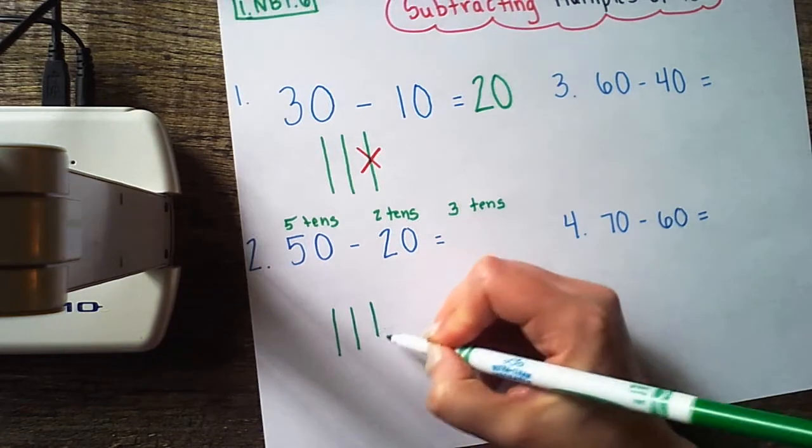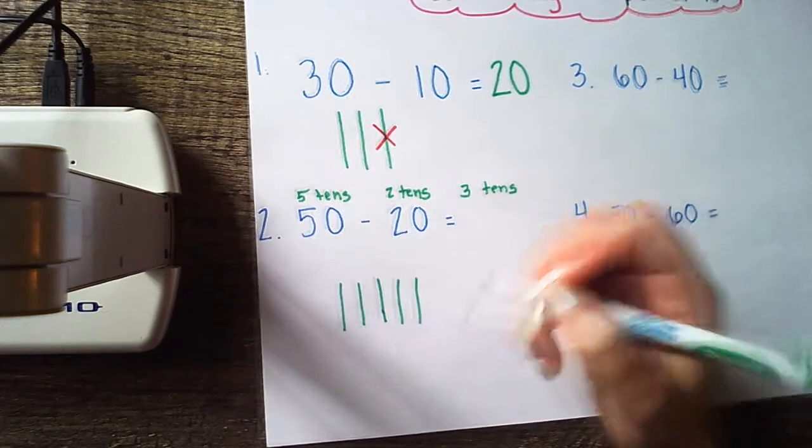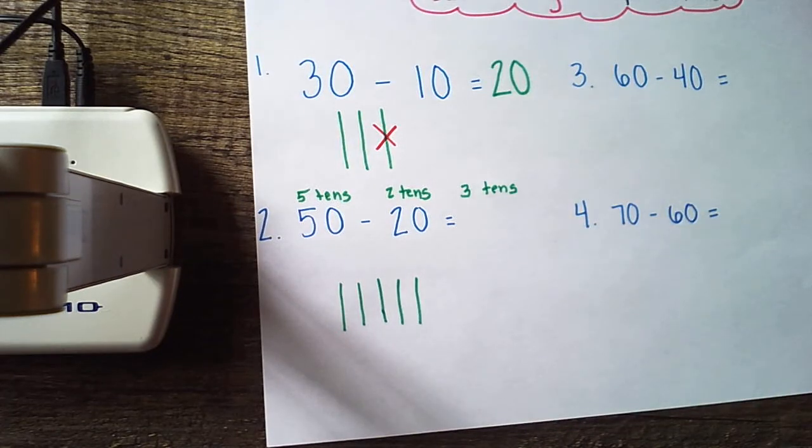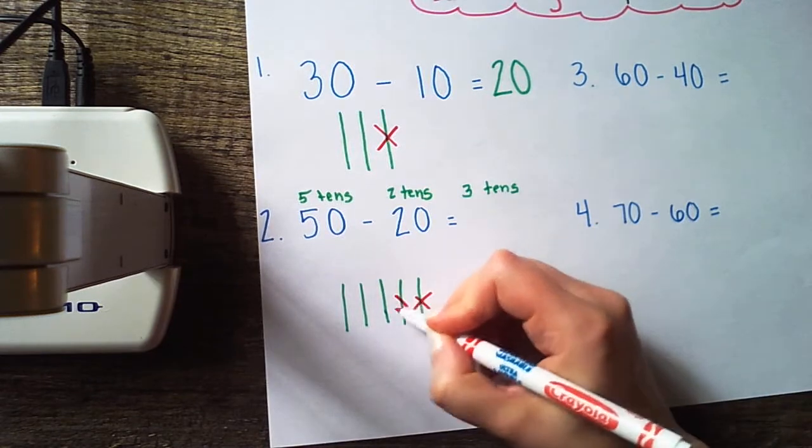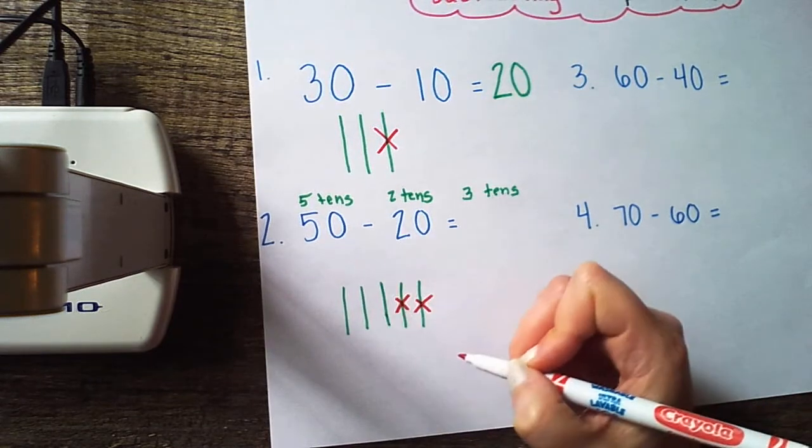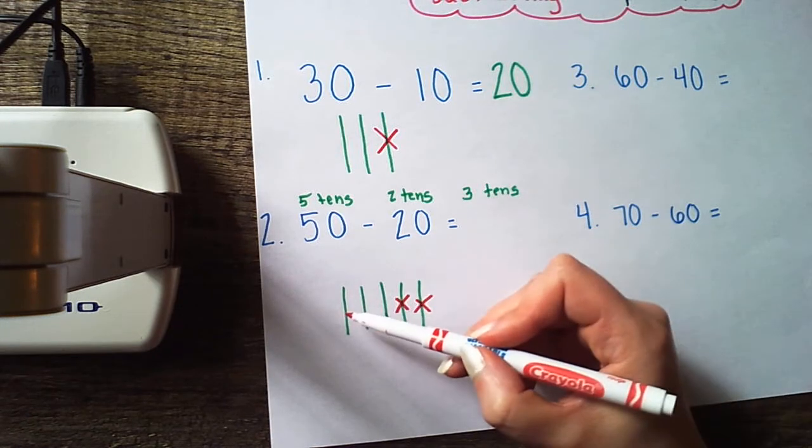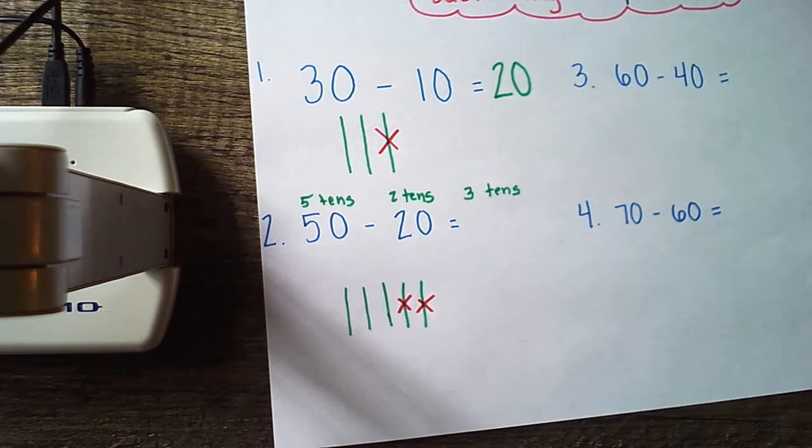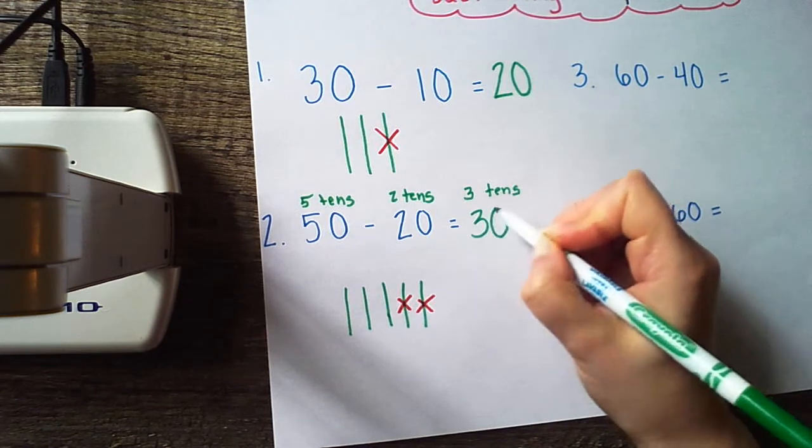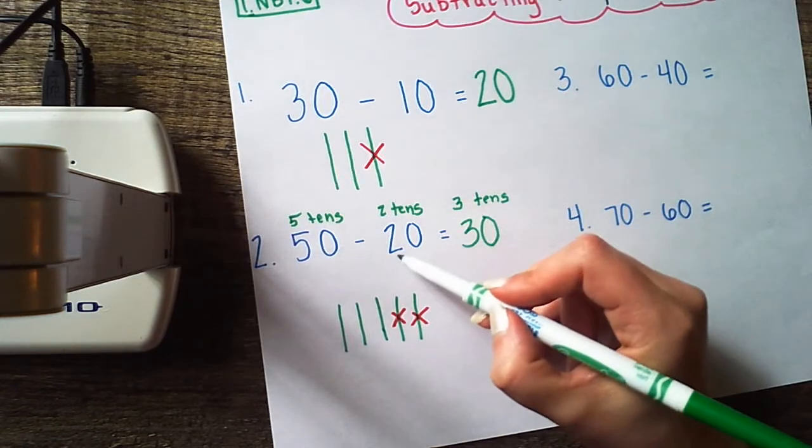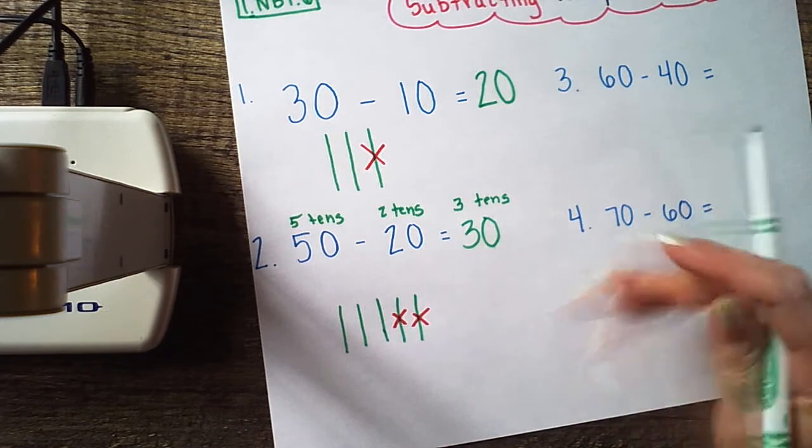I'm going to draw 50: 10, 20, 30, 40, 50. Five tens is 50. I'm going to subtract or take away 2 tens: 1 ten, 2 tens, or 10, 20. And I should be left with 3 tens. Let's see: 1, 2, 3 tens, or 10, 20, 30. Look at that! The digit in the tens place went down by the number of tens we subtracted, so we're now left with 30 or 3 tens.